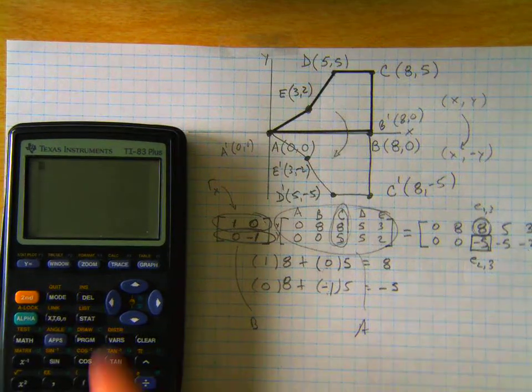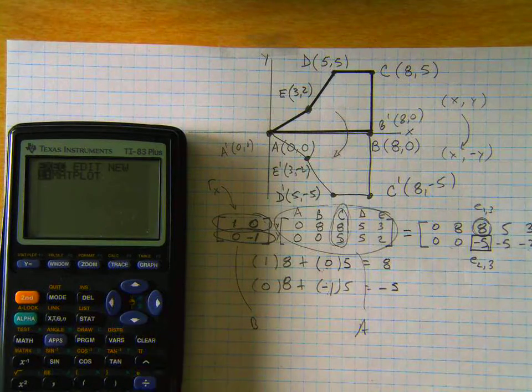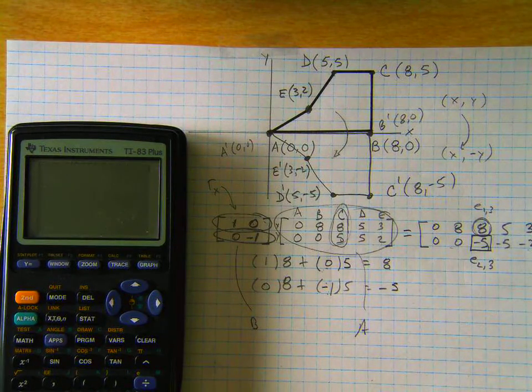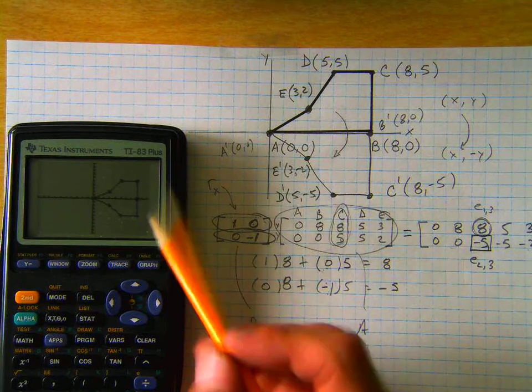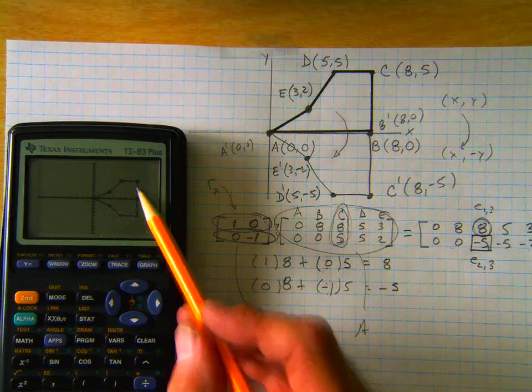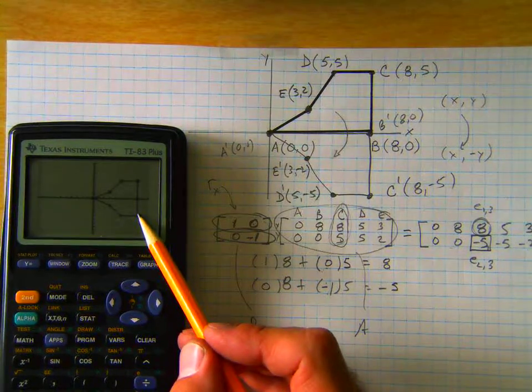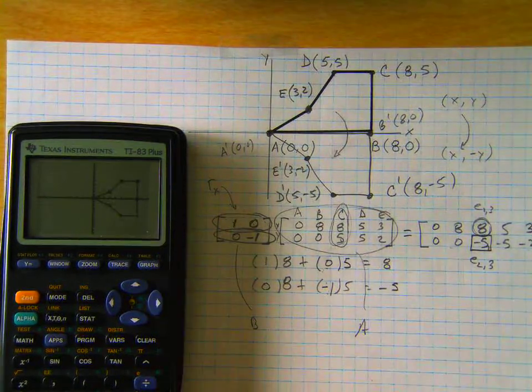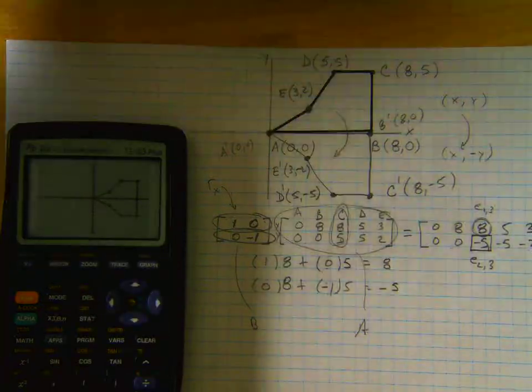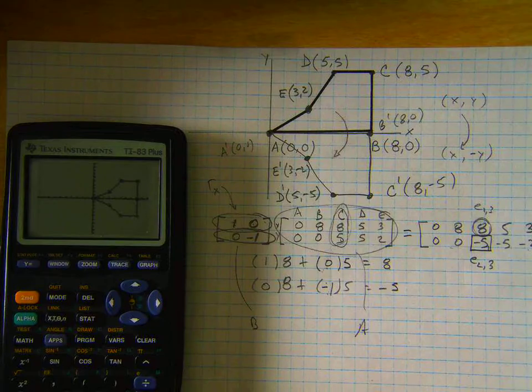Now, if we go to program and run the matplot program, you will see the original image. That switches the pre-image, and then you'll see the image, and we did reflect over the x-axis. You can use that same process to figure out all the other reflections.